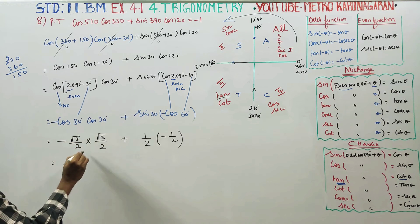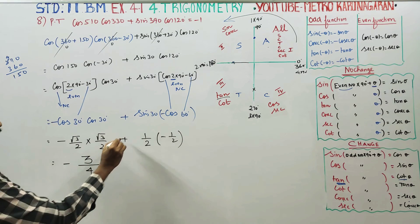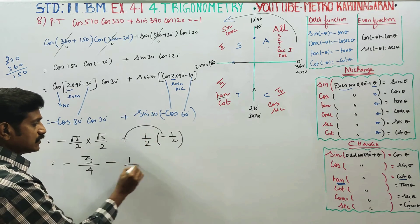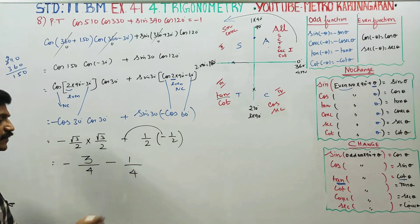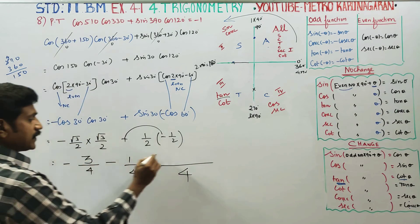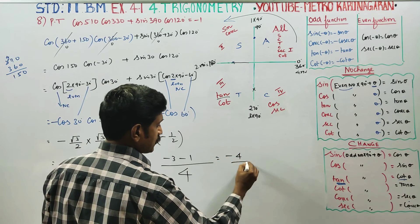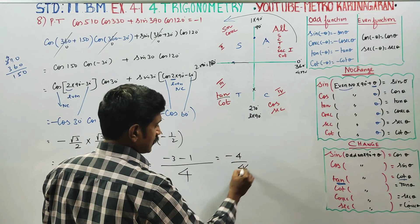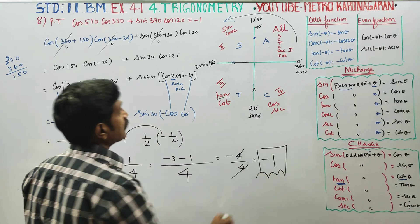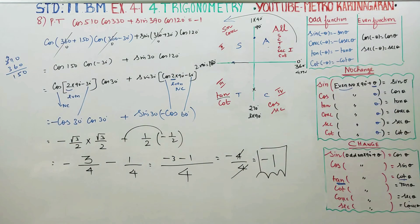Minus root 3 times root 3 is 3. 2 times 2 is 4. Plus 1 times 1 is 1, over 4. LCM is 4. So we get minus 3 minus 1, which gives minus 4 by 4. Answer is minus 1. Thank you.